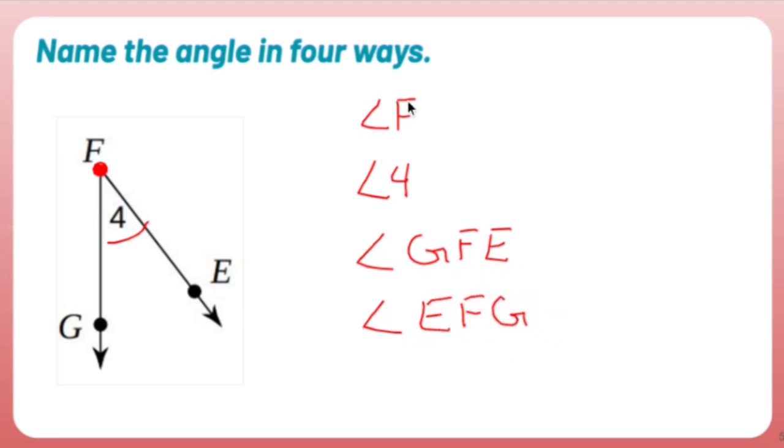So all four of these are ways that you can name this angle right here. What's key is noticing that your vertex is F. Everything is pretty much based around it. We also had a number that works too.